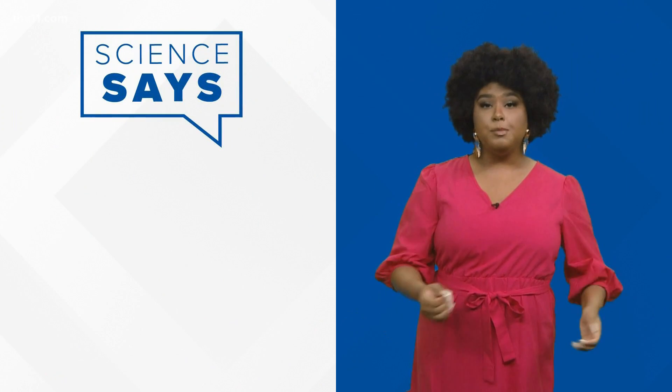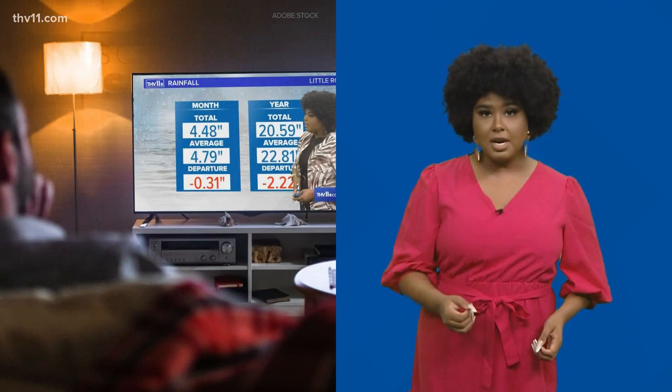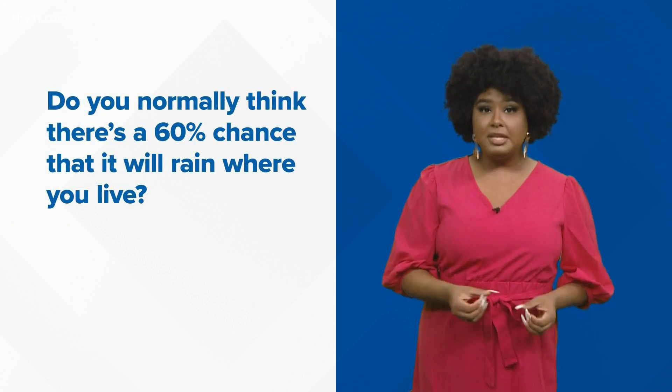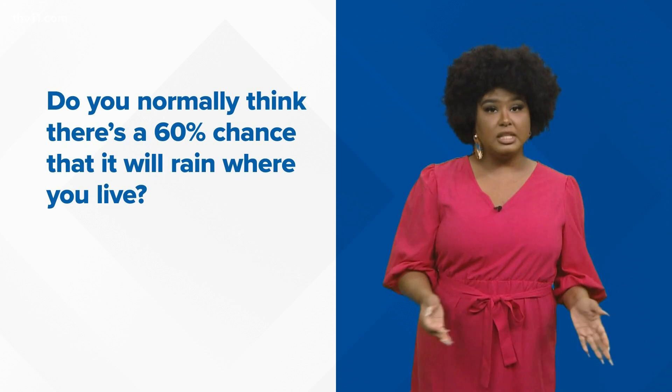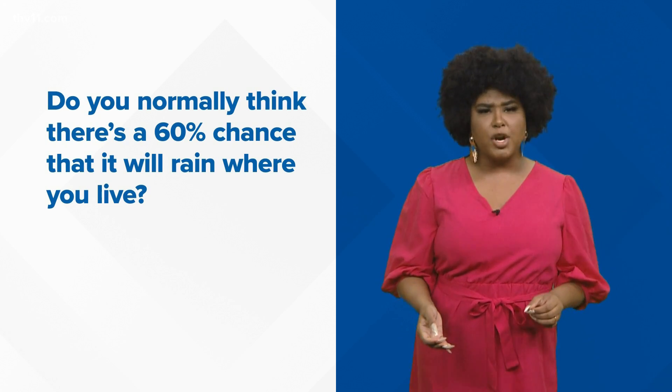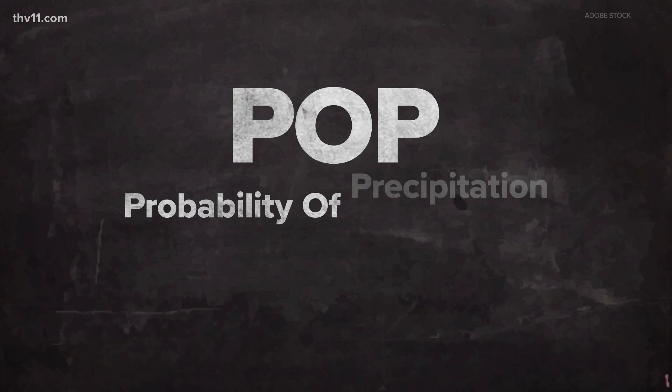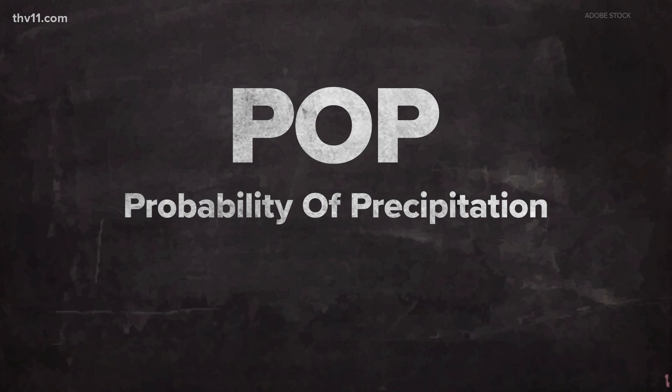If you hear your local meteorologist talking about a 60% chance of rain, do you normally think that there's a 60% chance that it will rain where you live? To understand percent chance of rain, we need to understand how rain is forecasted. The National Weather Service uses POP, or Probability of Precipitation, when talking about the chance of precipitation in a specific forecast area.